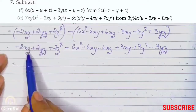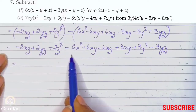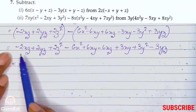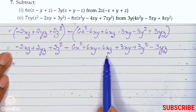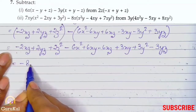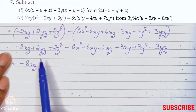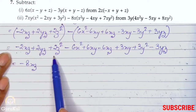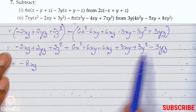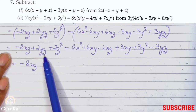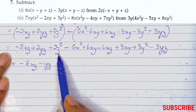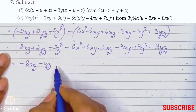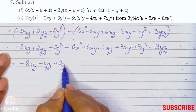Next step — xz. Combining: minus 2xz minus 6xz. Since both are negative we add them, giving minus 8xz. Then yz: plus 2yz minus 3yz gives minus yz. z² — there is no other z² term, so we copy it: plus 2z².